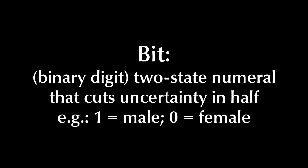A bit, or binary digit, is simply a 1 or a 0, and it can answer any question to which there are only two possibilities: yes or no, heads or tails, male or female, and so on. You just assign one value to a 1, and the other is the 0 — so maybe a 1 in a database means the person is male, and 0 means she's female.